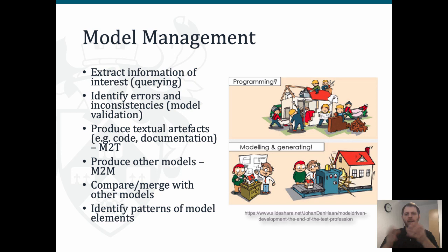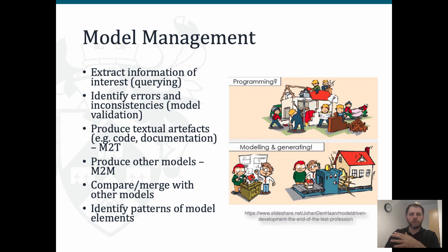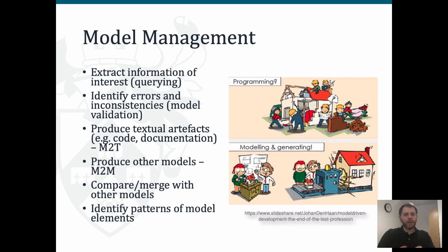To build such machinery for models, we need to be able to query models and extract information of interest. We need to identify errors and inconsistencies in our models so that these are reported very early - not when we've actually generated the house. And then of course to transform our models into textual artifacts that could be code, documentation, or configuration scripts, as well as other models. In a collaborative setting we're also interested in comparing and merging models, and we call the sum of these activities model management activities.